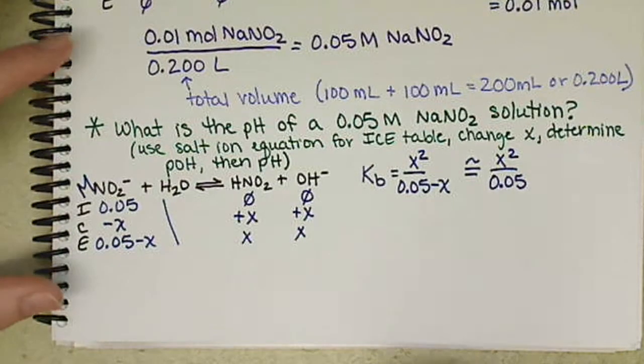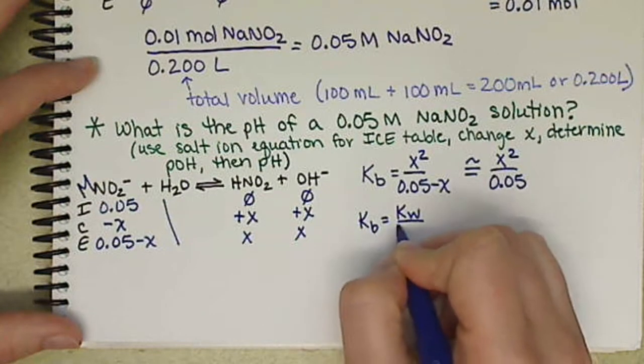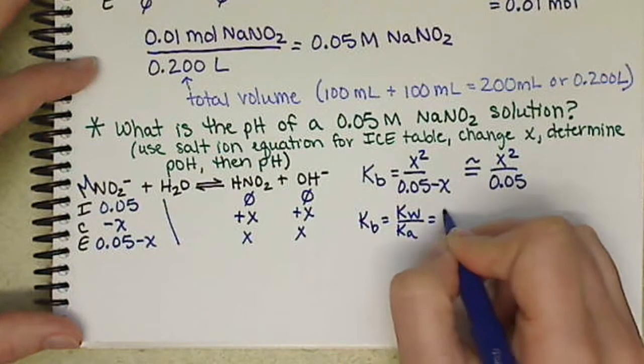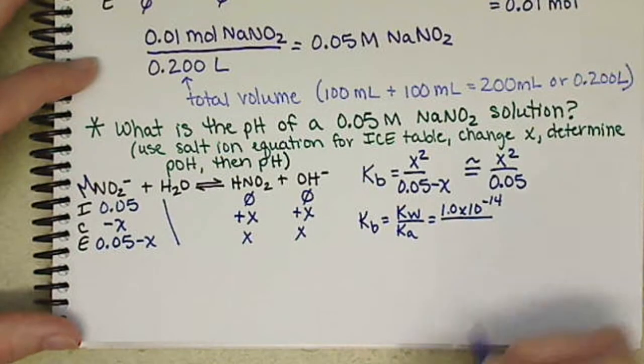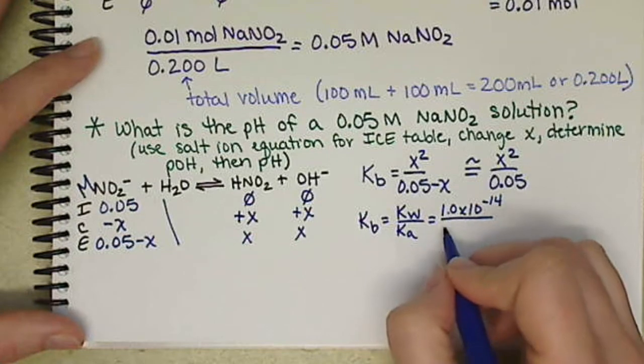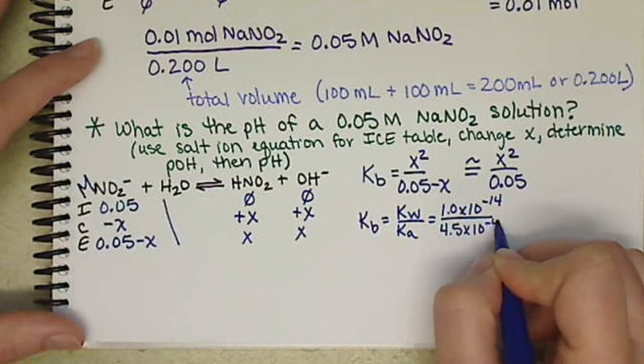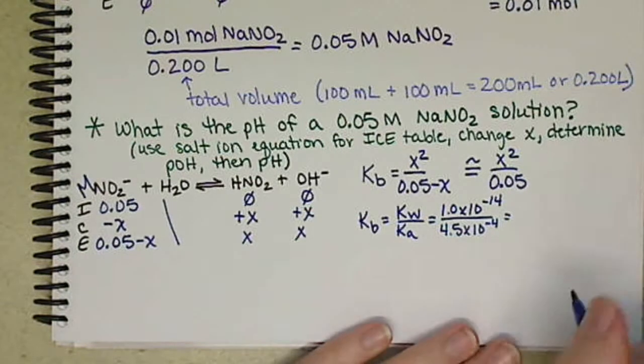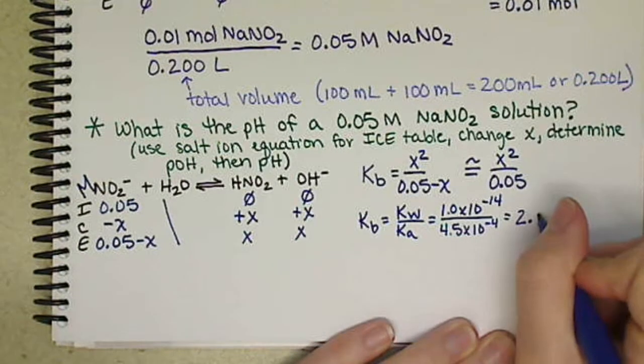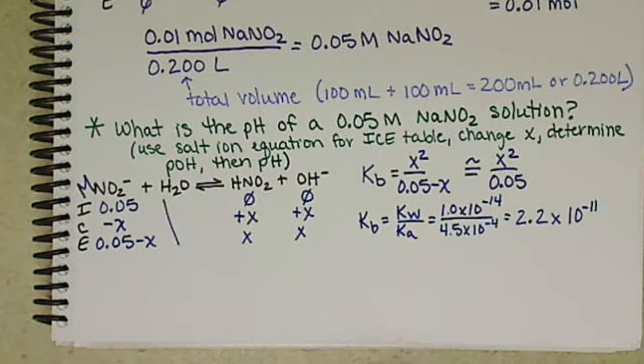We were given Ka. So our value for Kb is going to be Kw divided by Ka. So 1 times 10 to the negative 14 divided by 4.5 times 10 to the negative 4. That's equal to 2.2 times 10 to the negative 11.